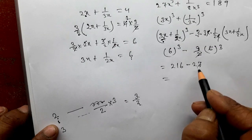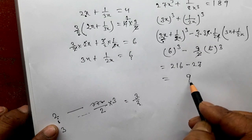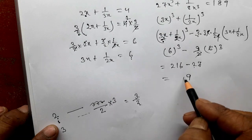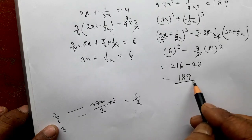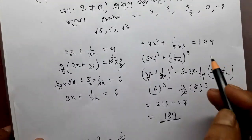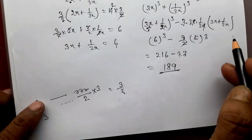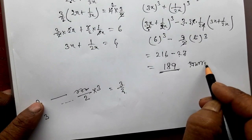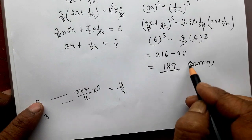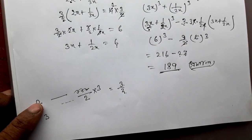So 6 cube minus 3 into 3 is equal to 7. So 2, 7, 9 — the answer is 1, 9, 9, 9. I get the result.